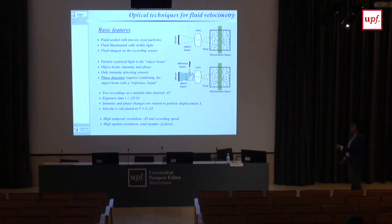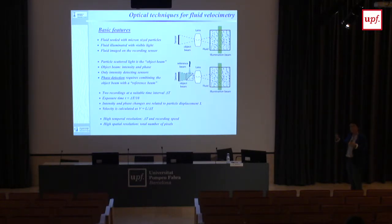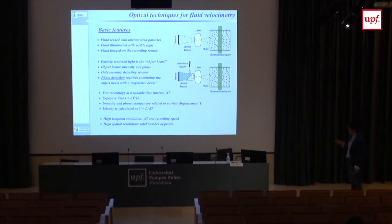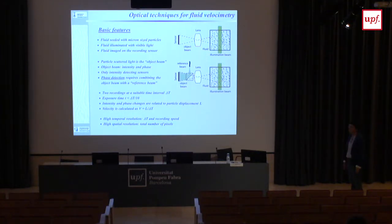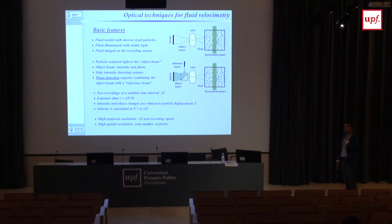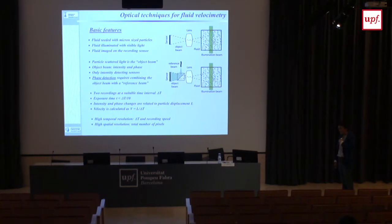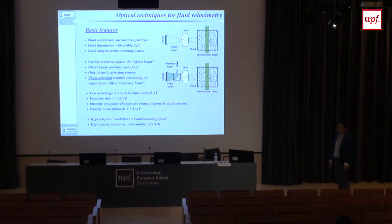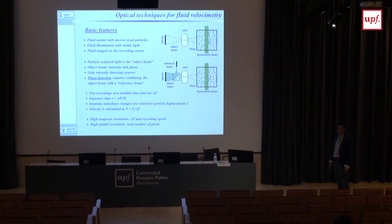About 35 years ago, statistical correlation analysis began. You don't need to identify individual particles — you can have more seeding and therefore higher spatial resolution. This is called Particle Image Velocimetry (PIV), which is now very widely used in every experimental fluid mechanics laboratory. There is commercial software and commercial equipment available.